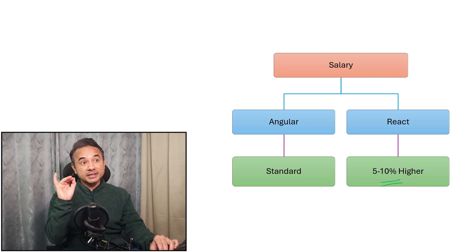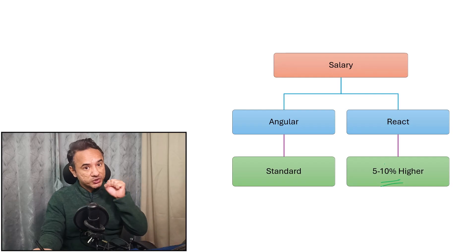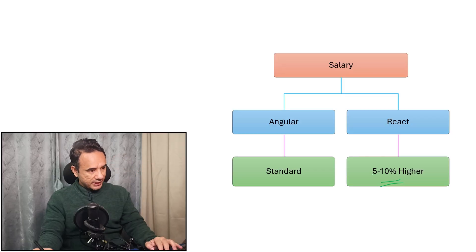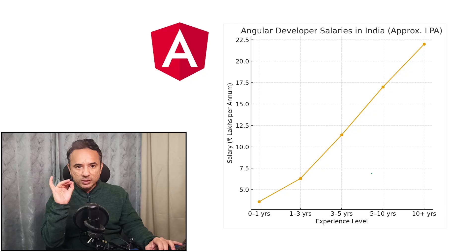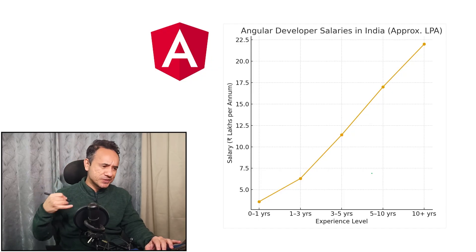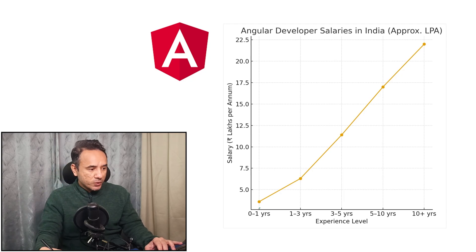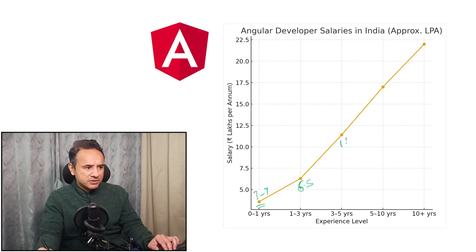Just because product-based companies use React more, they pay more also. That's why this 5 to 10 percent difference. But yes, product-based companies have fewer jobs than IT companies like TCS, Wipro, Infosys. They have many jobs. Now let me show you the salary of Angular developers in India based on the experience. I can't say about other countries because I am not aware. An Angular developer from zero to one years experience will get around 3 to 4 LPA, then from one to three experience will get around 6.5, then three to five experience will get 11.5.